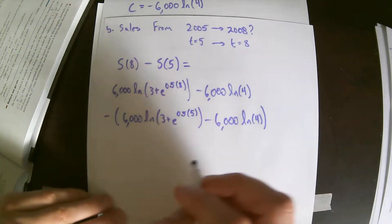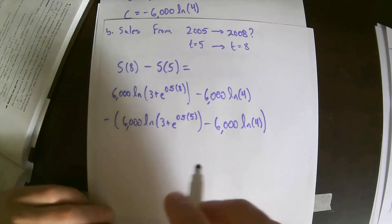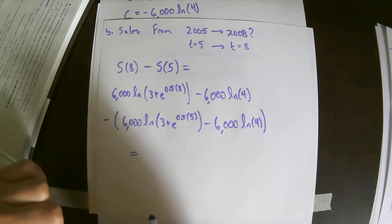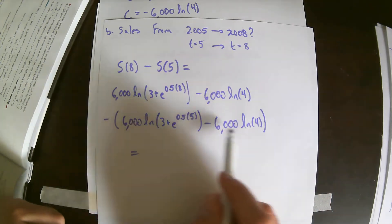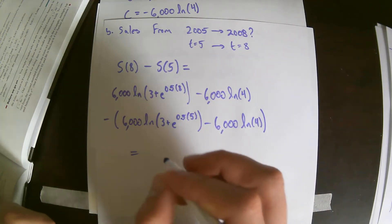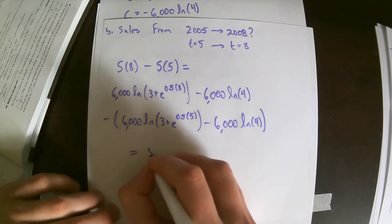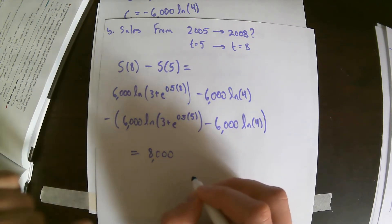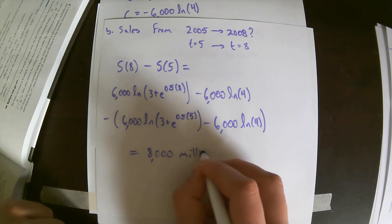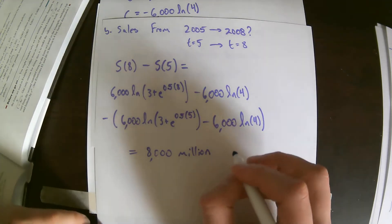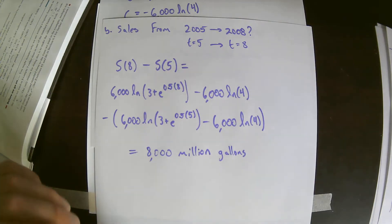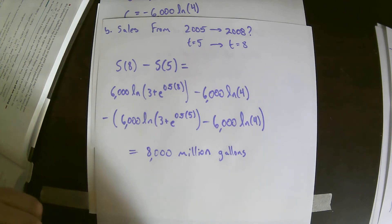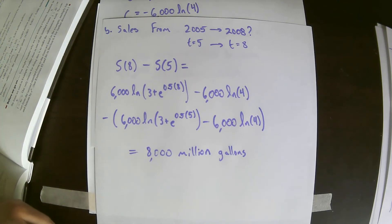We plug it all into the calculator. The result is roughly 16 million minus roughly 8 million, giving a difference of about 8,000 million gallons. That completes part B.